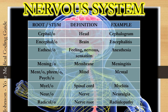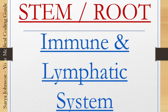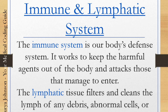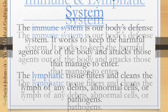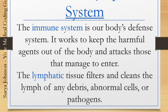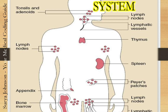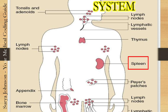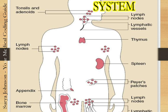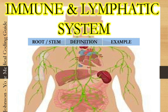The next one is radiculo — radiculo means nerve root. Example: radiculopathy, which is a disorder of your nerve root. Next, we will see the stem or root word pertaining to the immune and lymphatic system. The immune system is the body's defense system — it works to keep harmful agents out of the body and attacks those that manage to enter. The lymphatic tissue filters and cleans the lymph of any debris, abnormal cells, or pathogens. The immune and lymphatic system is composed of tonsils and adenoids, lymph nodes, lymphatic vessels, thymus, spleen, Peyer's patches, appendix, and bone marrow.